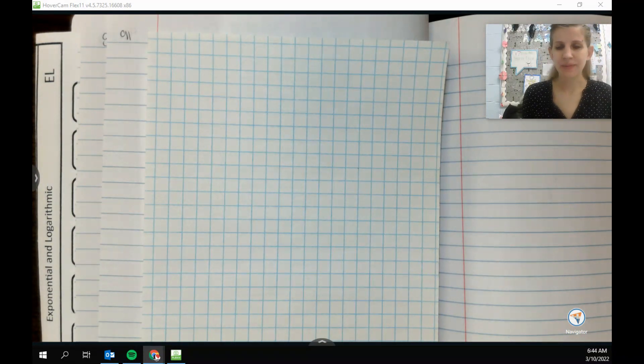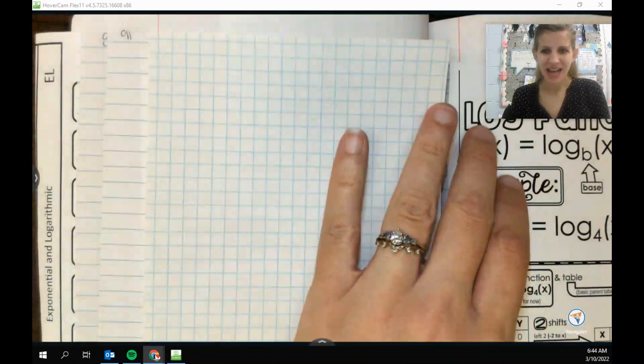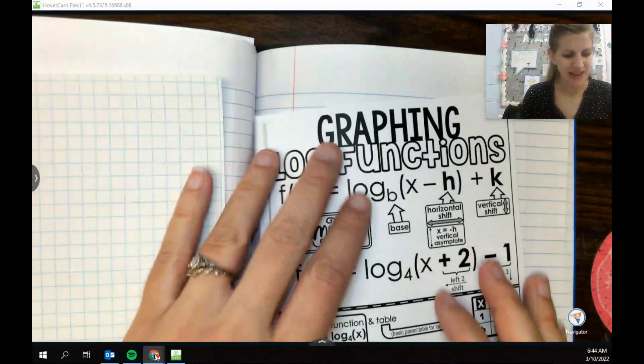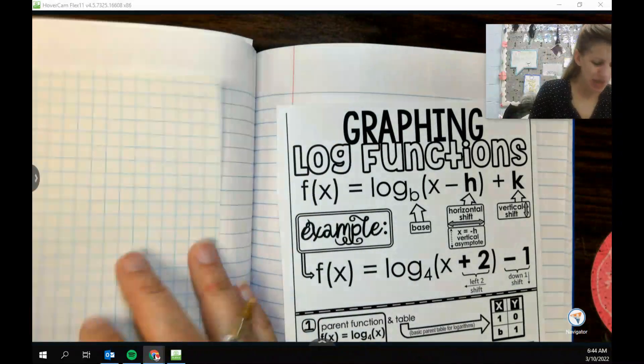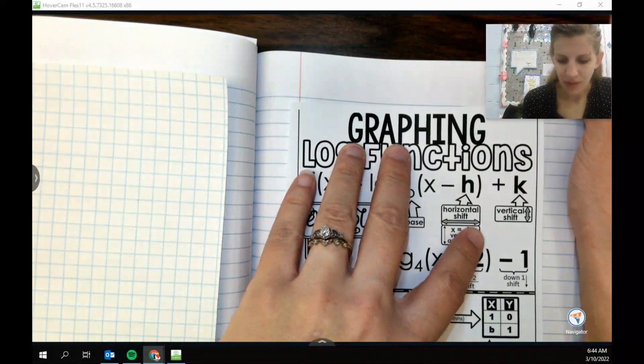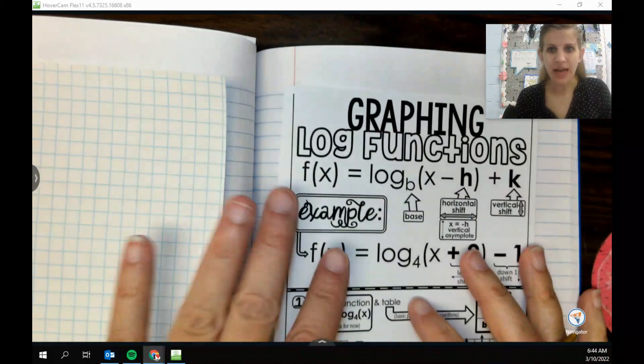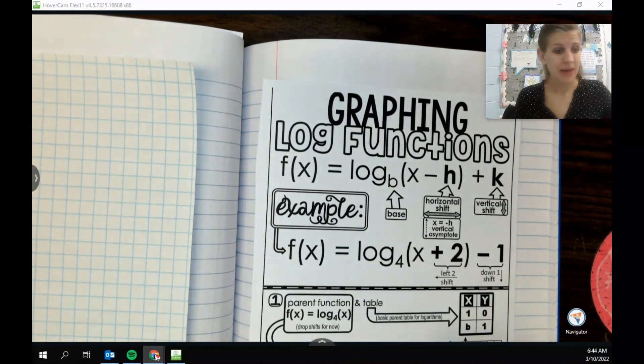All righties. So on page 91, I'm going to put some graph paper so that we can graph. Oh boy, my tape's not over here. I'll tape these in after. And then we have this one here that's going to go on 92. Okay, so I'm going to tape these in after just because my tape is far away from me.